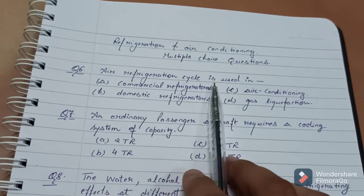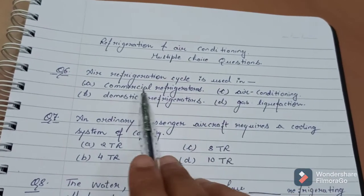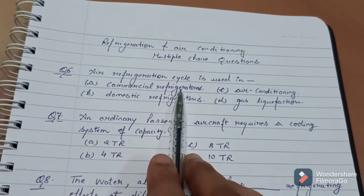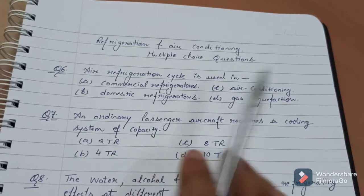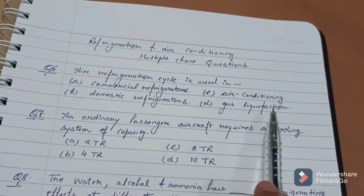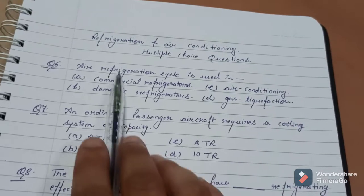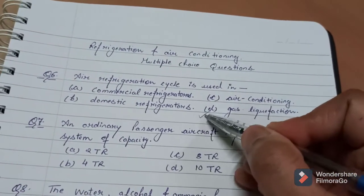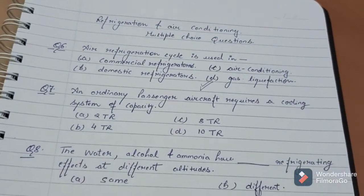Air refrigeration cycle is used in: A. Commercial refrigerators, domestic refrigerators, air conditioning, or gas liquefaction. So the air refrigeration cycle is used for the gas liquefaction.